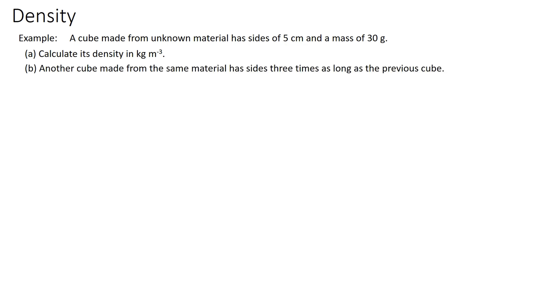Now, let's look at this example. A cube made from unknown material has size of 5 cm and a mass of 30 grams. (a) Calculate its density in kg per meter cube. (b) Another cube made from the same material has size 3 times as long as the previous cube. Calculate its mass in kgs. You can pause the video and answer the question.